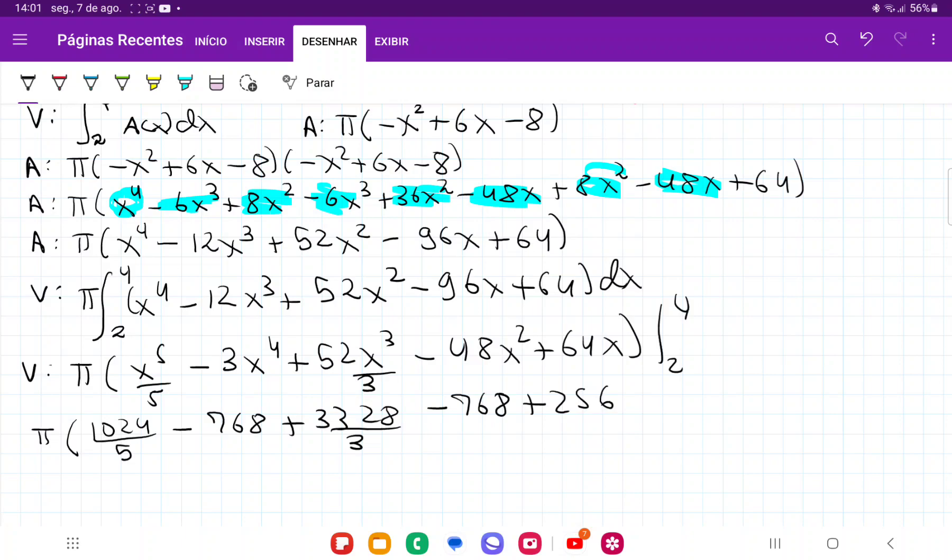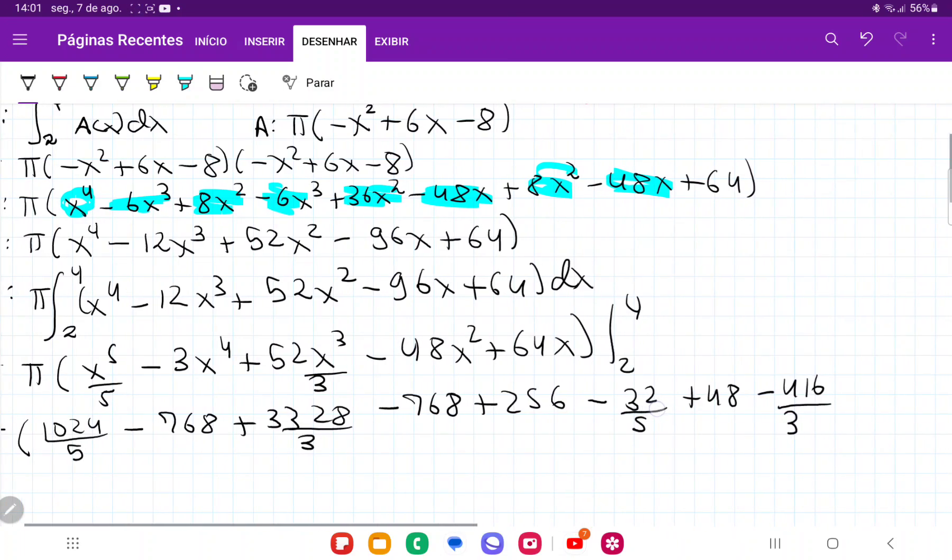So then this goes minus 2⁵, so -32/5. Minus minus, so that's going to give us plus 48. Minus 416/3. And then let's see, minus minus, so that's going to give us plus 192. And lastly, minus 64 times 2, so -128. Oof, that was quite a lot.